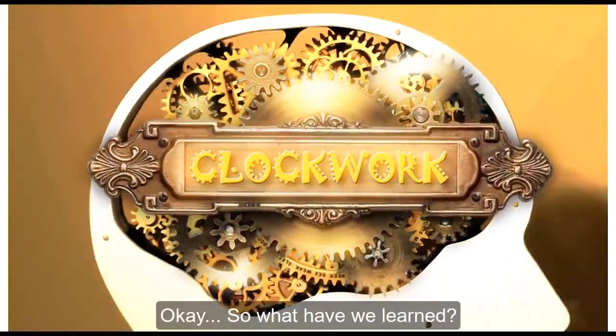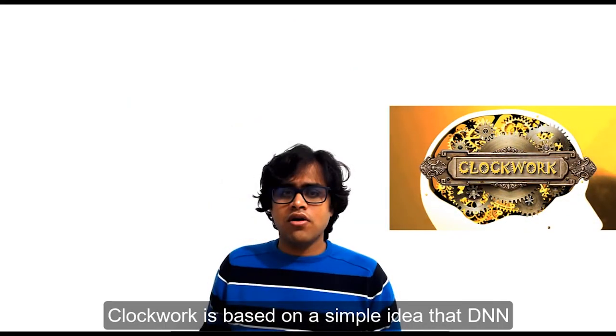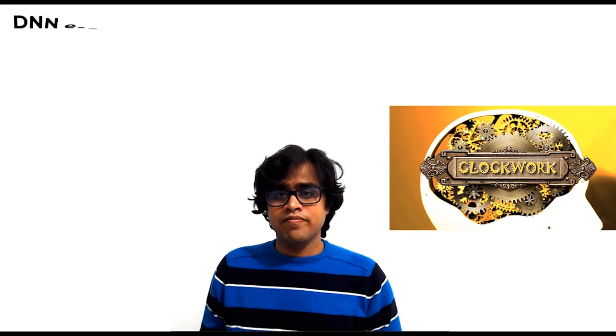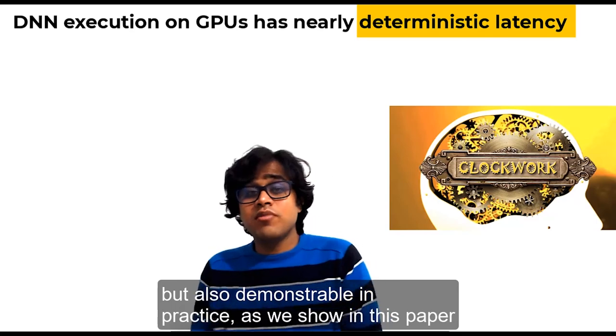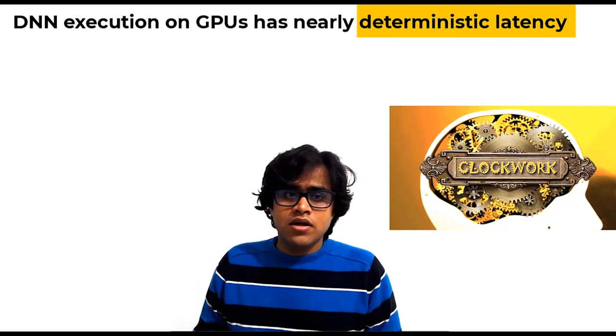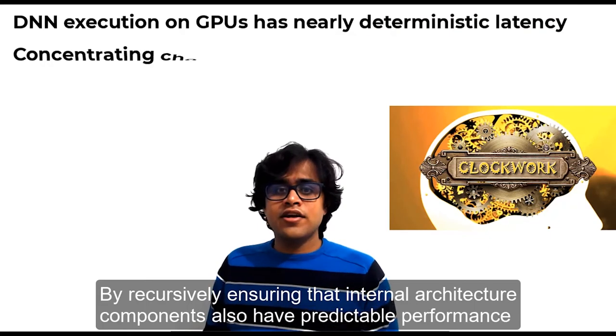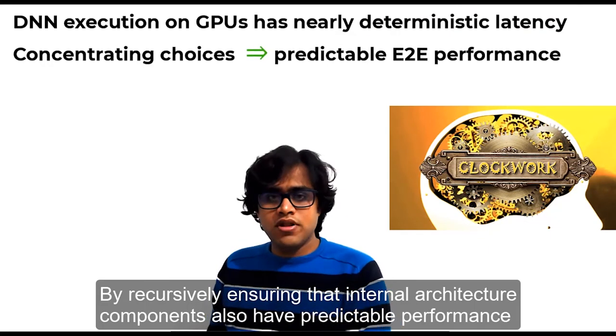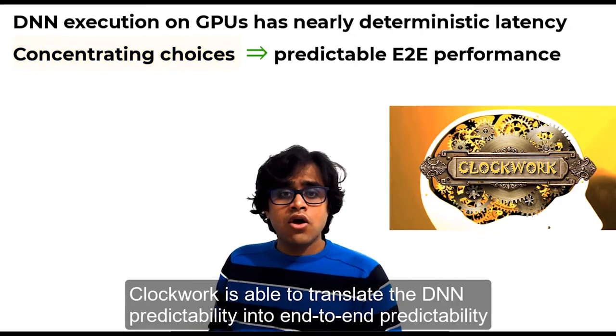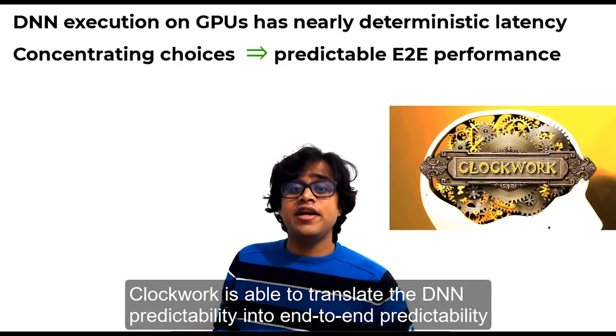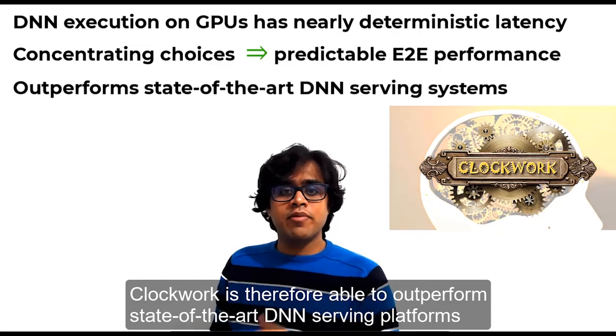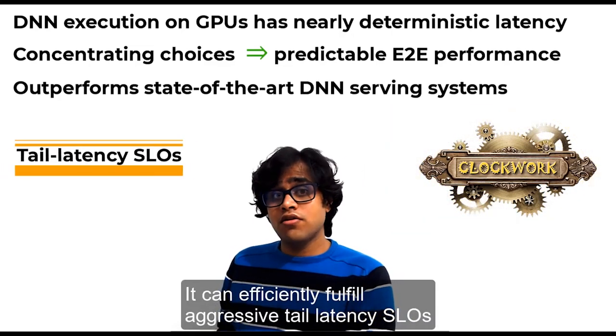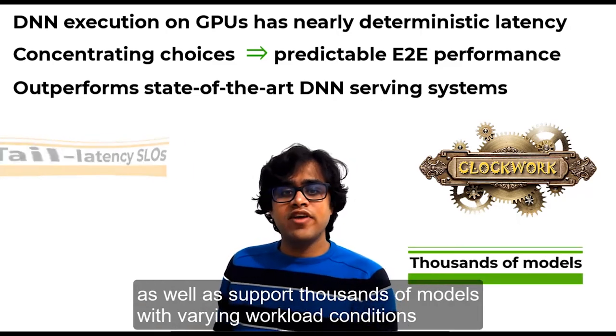Okay, so what have we learned? Clockwork is based on a simple idea that DNN executions on GPUs exhibit negligible latency variance. This observation is both intuitive because DNN inferences involve no conditional branches, but also demonstrable in practice as we show in this paper. By recursively ensuring that internal architecture components also have predictable performance, and by concentrating all choices in a centralized controller, Clockwork is able to translate the DNN predictability into end-to-end predictability. Clockwork is therefore able to outperform state-of-the-art DNN serving platforms. It can efficiently fulfill aggressive tail-latency SLOs as well as support thousands of models with varying workload conditions.